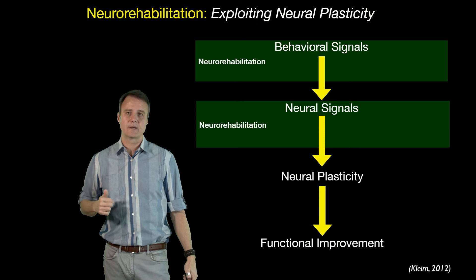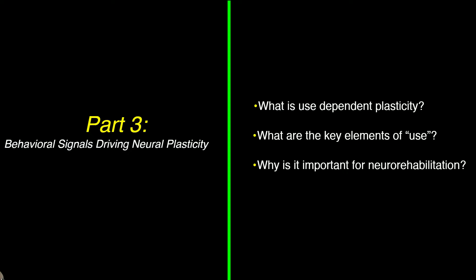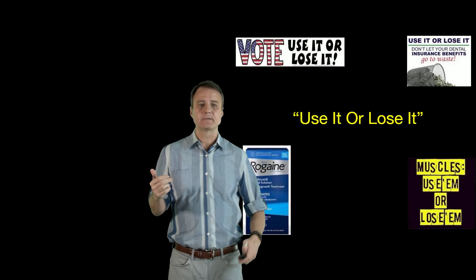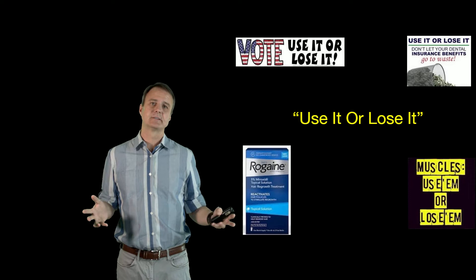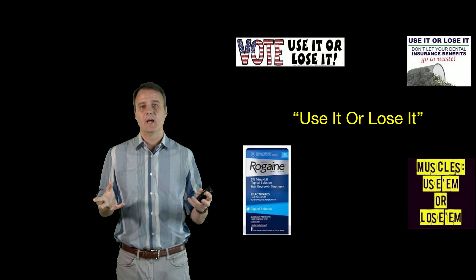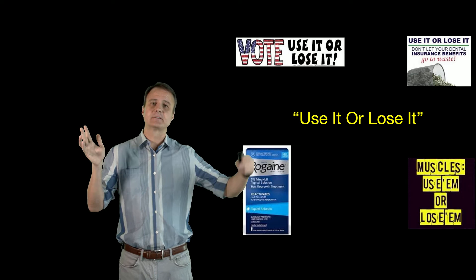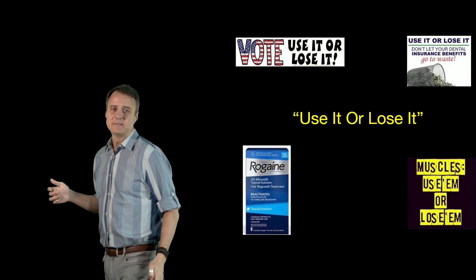Part Three covers use-dependent plasticity and the key elements of use. We've all heard 'use it or lose it' — neuroscientists have used this term for years, with the idea that a brain area not being used will somehow degenerate, be lost, or be repurposed. We've applied this concept to voting, working out, hair loss, health insurance, and many other things.